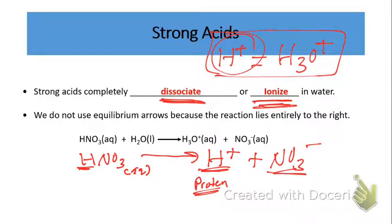The word dissociate means that two things break apart from each other. In this case, the H+ breaks away from the nitrate — in other words, dissociates from it. We often use the terms dissociate and ionize when talking about acids. We usually don't use ionize for bases, because bases do not get ionized — but they do dissociate, as we'll see in a bit.